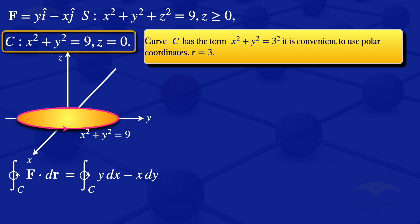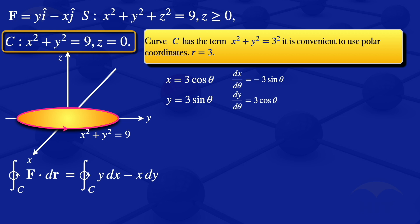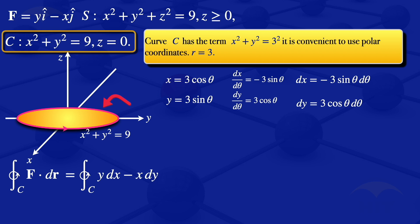It is convenient to use polar coordinates where r = 3. So using polar coordinates we have x = 3 cos θ, y = 3 sin θ. Differentiating with respect to θ: dx/dθ = -3 sin θ and dy/dθ = 3 cos θ, giving dx = -3 sin θ dθ and dy = 3 cos θ dθ. Since this is a circle, θ varies from 0 to 2π.